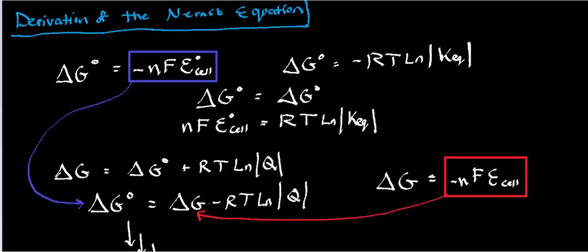We've been talking specifically about Gibbs free energy in the past few videos. In some cases, it might be helpful — especially if you're dealing with an oxidation-reduction reaction — to use something referred to as the Nernst equation to calculate delta G. However, to do that, you first have to know the cell potential of the particular oxidation-reduction reaction, and then from there you can calculate delta G.